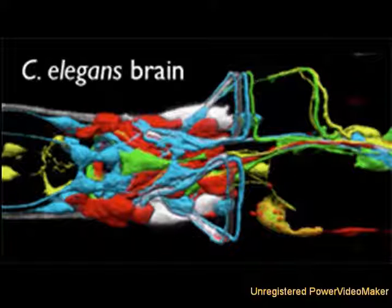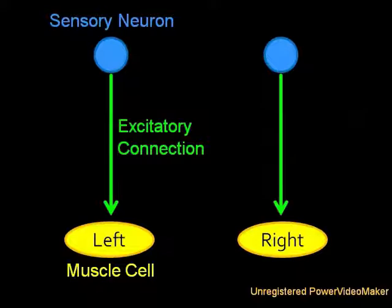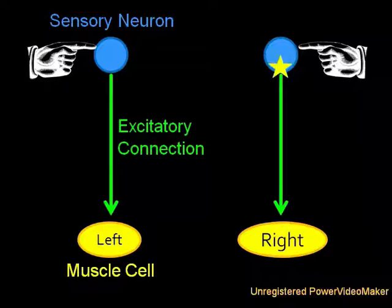Here we see two simple input-output circuits. An input to the left results in the left muscle contracting. An input to the right results in the right muscle contracting.